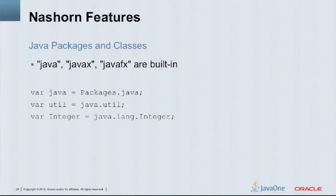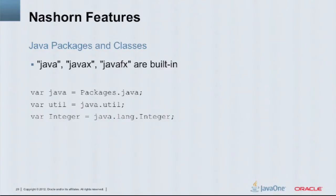Since we're tied closely to Java, to use Java you need to be able to access packages and classes. It's fairly straightforward. To get a class, you use 'packages' dot notation and then the class name. Java, JavaX, and JavaFX are all built in as globals, so you can access them easily. For example, 'var util = java.util' gives you the util package as a shortcut. And 'var Integer = java.lang.Integer' assigns the Integer class to Integer, and you can access it directly.